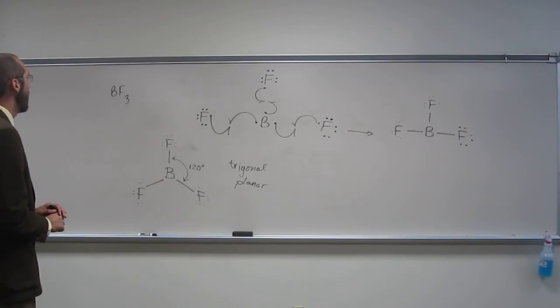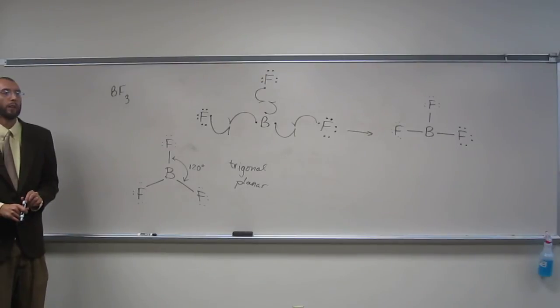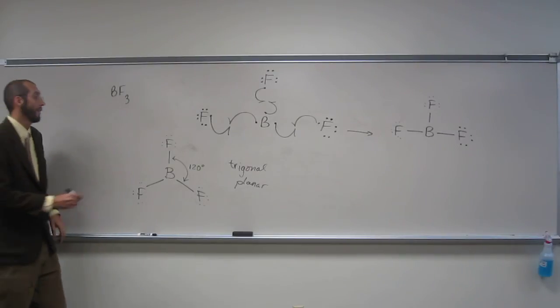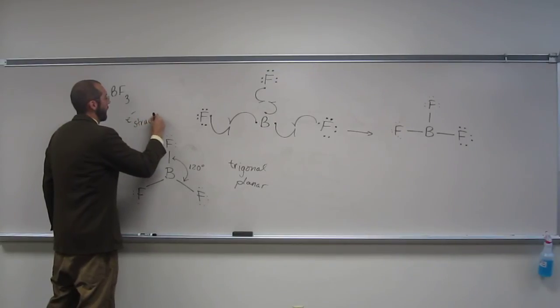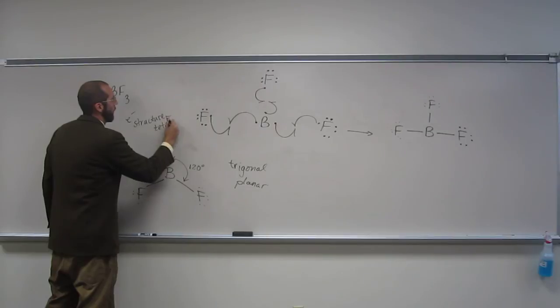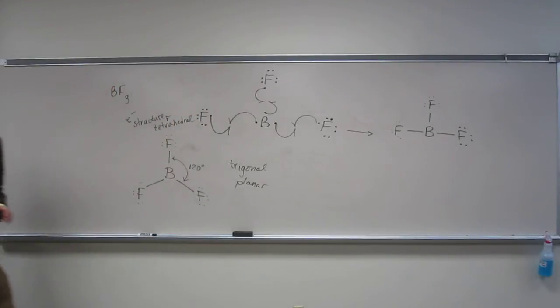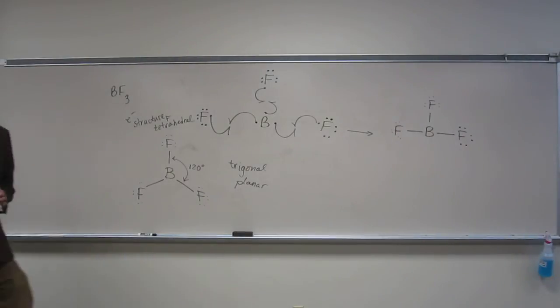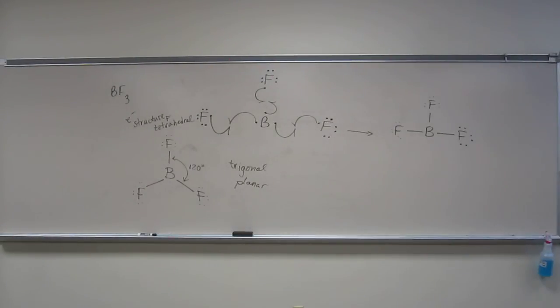So how about this? What's the electronic structure around the fluorine? Tetrahedral. Tetrahedral, yeah, so the electronic structure around the fluorine is tetrahedral. You guys cool with that? Why? Because there's four areas of electron density.